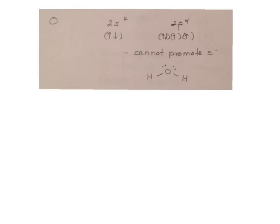Going to oxygen, 2s2, 2p4, two unpaired electrons, two bonds. Here's a lone pair and another lone pair. So it forms things like water. It cannot promote an electron because there's no such thing as a 2d. It simply doesn't exist.